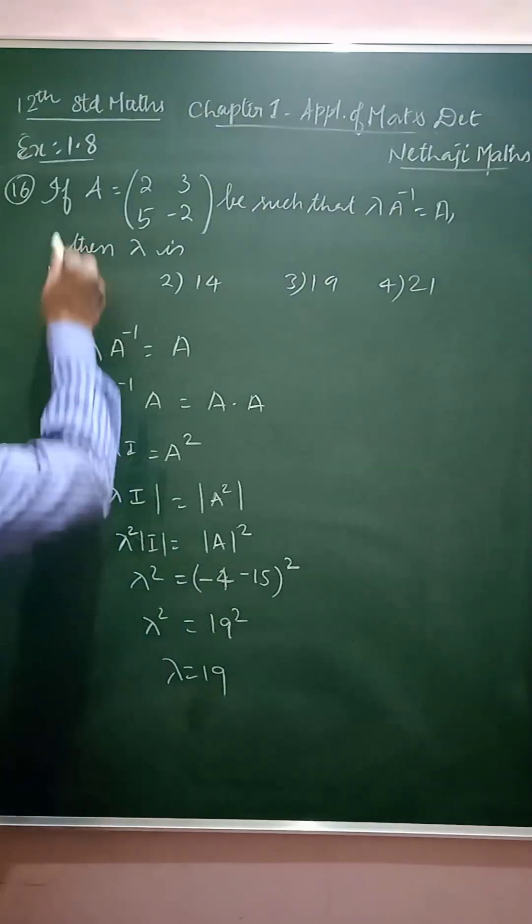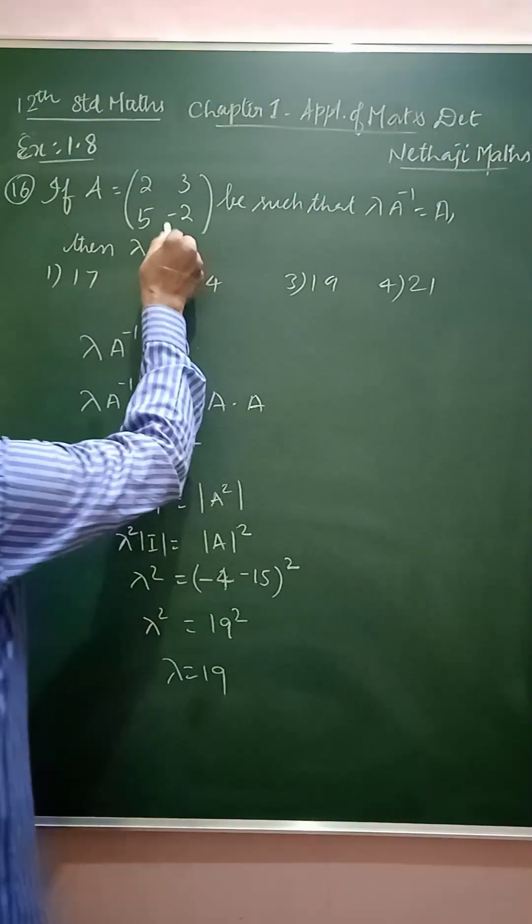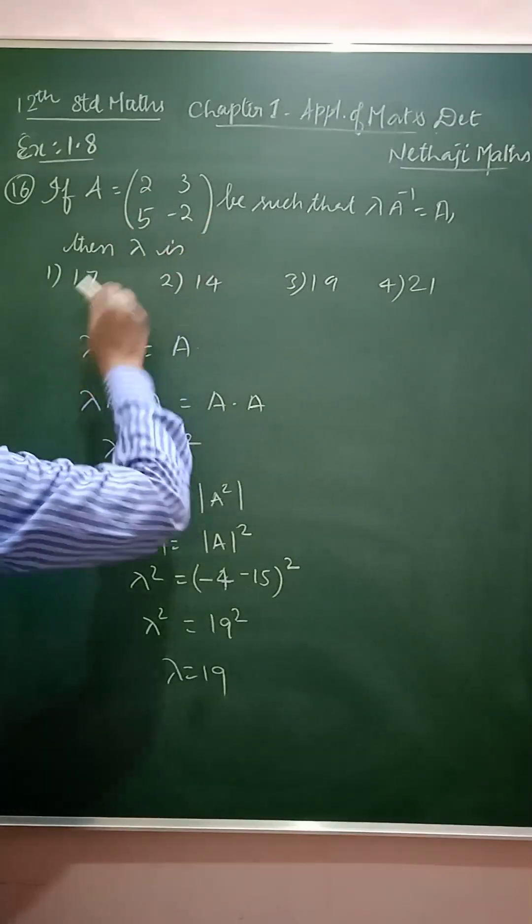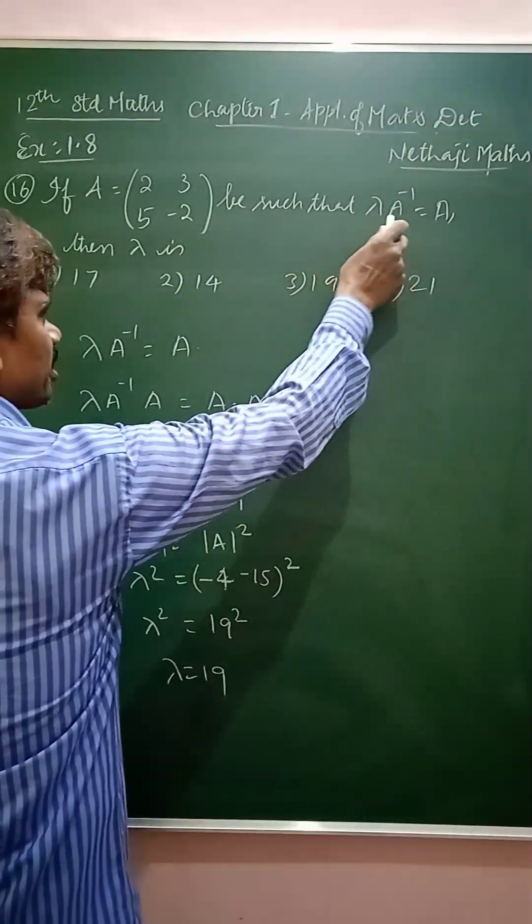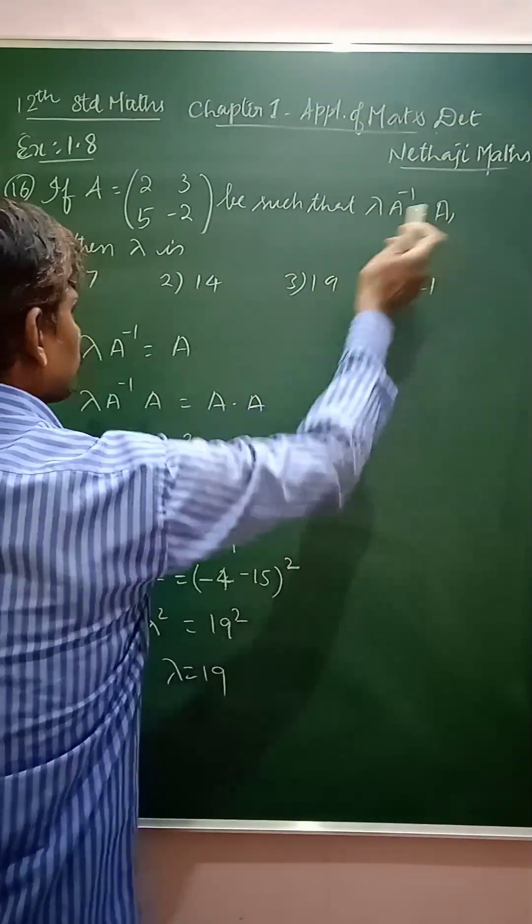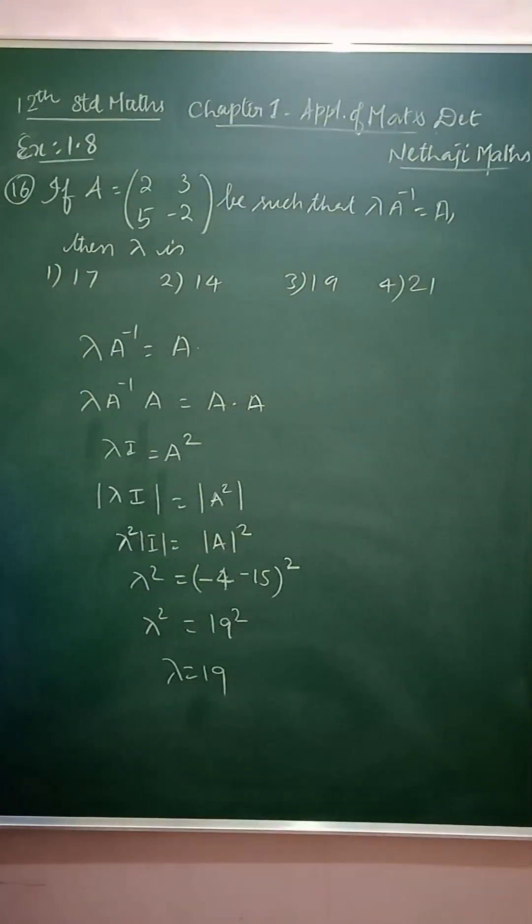Next, in the 16th sum, the question is, if A has a matrix 2 by 2 with elements 2, 3, 5, minus 2, be such that lambda into A inverse is equal to A, then you have to find the value of lambda.